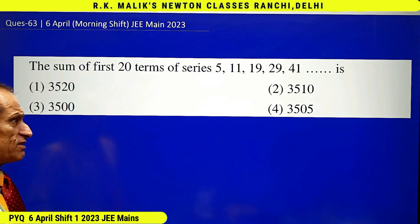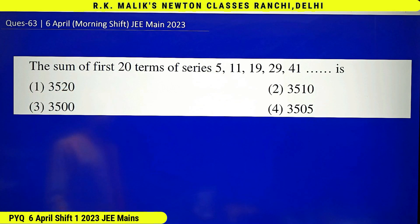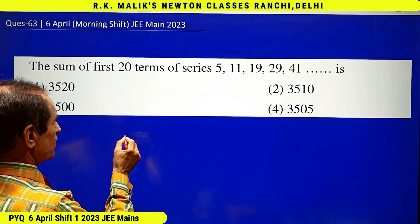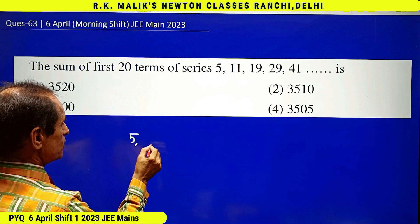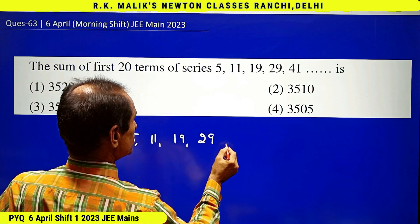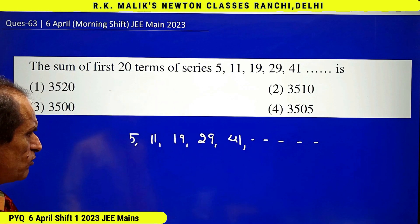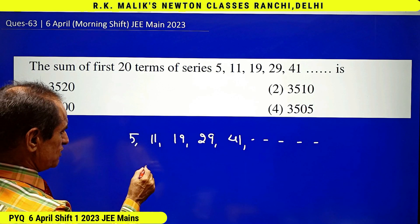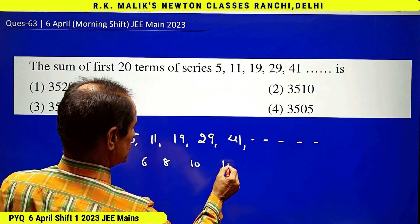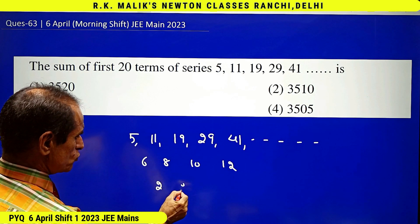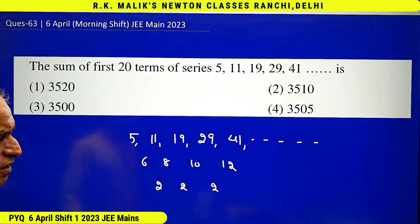There are so many ways of doing this question, but the way I am going to tell you is the best and very smart way. The sequence is 5, 11, 19, 29, 41, and so on. My method says: find the difference — the differences are 6, 8, 10, 12, and so on. Again find the difference: 2, 2, 2.